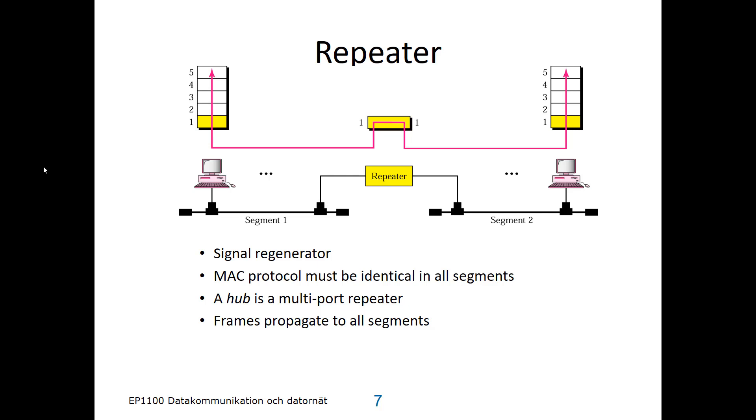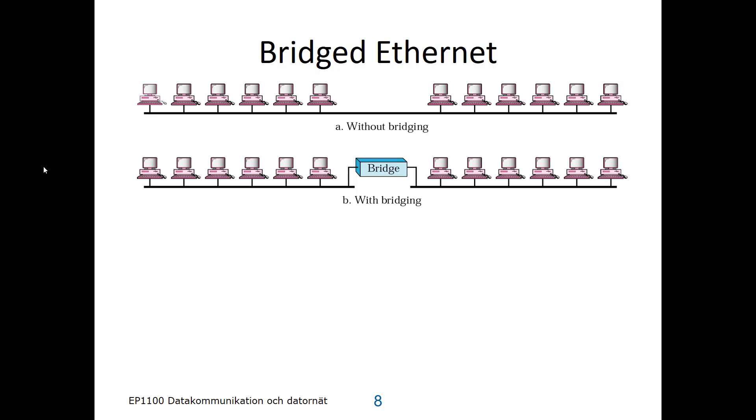That's why bridged networks have been introduced. Without the bridging, with just an amplifier regenerator, it looks like one big bus network in the top picture here. But with a bridge, you separate them into two separate networks.